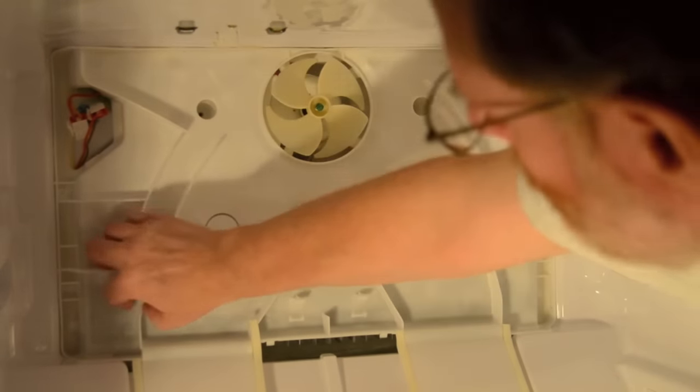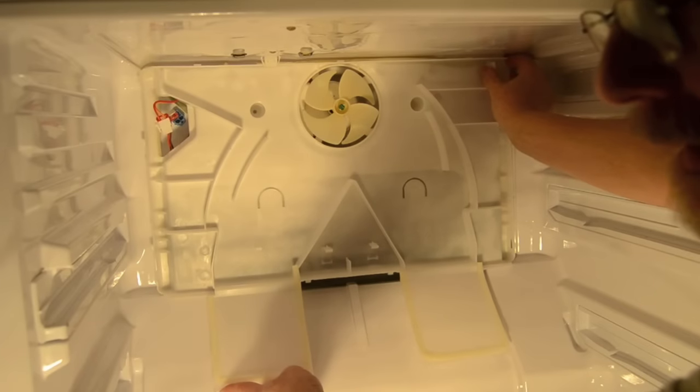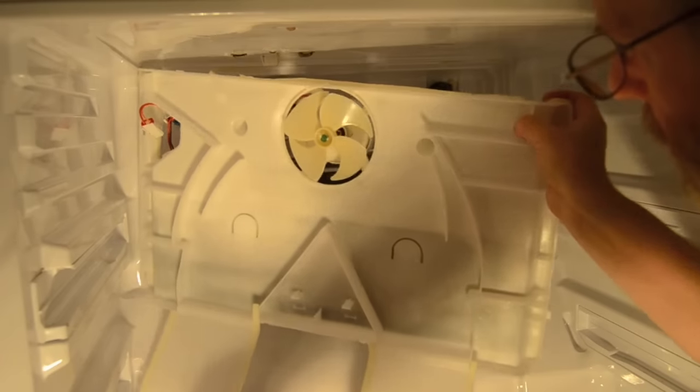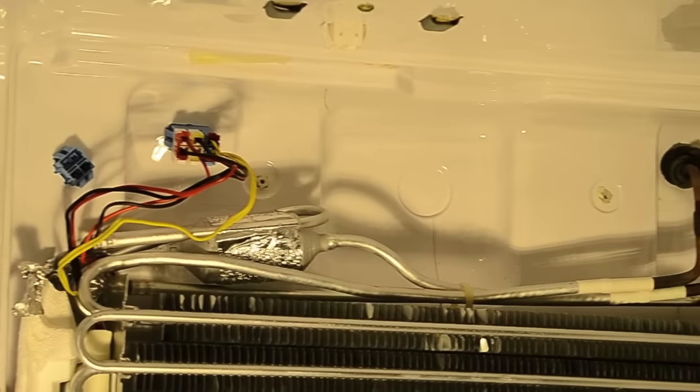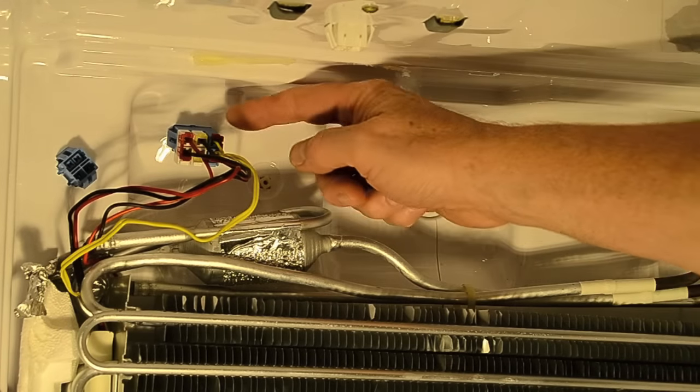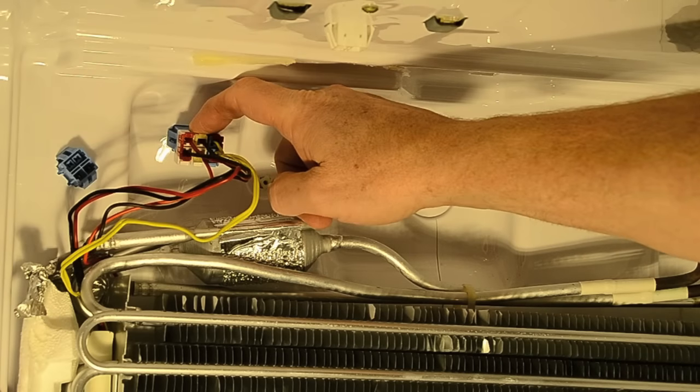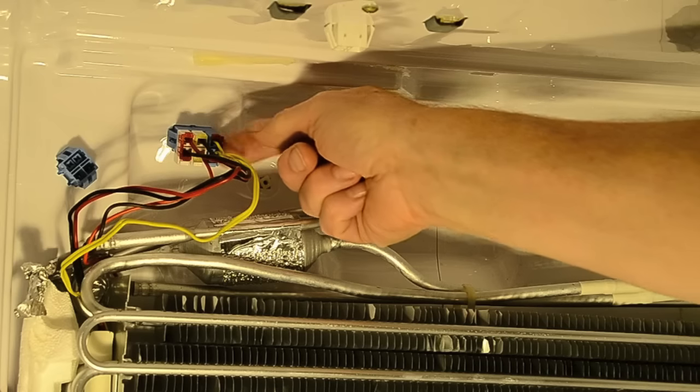It can be hard to get a grip on it. Once you have it loose, simply pull it out and you will see the evaporator coils. Squeeze the clips on the three cable connectors above the evaporator coils and gently pull to disconnect. Write down where they go so you'll know where to put them back.